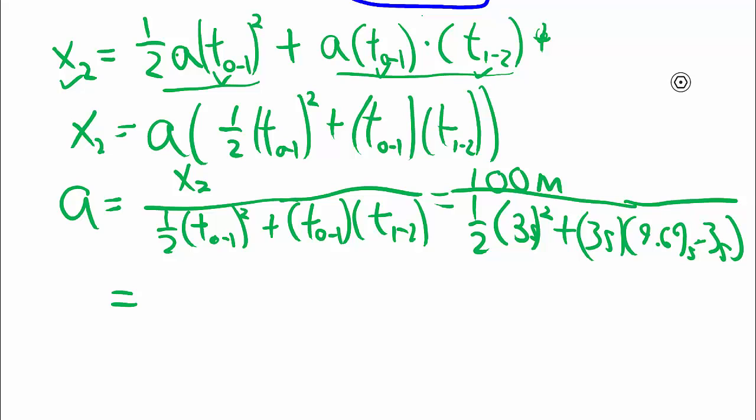And then the time between one and two is 9.69 minus three seconds, giving us 6.69 seconds. We end up getting, checking the units, meters per second squared, meters per second times seconds. Everything works out in terms of the units.